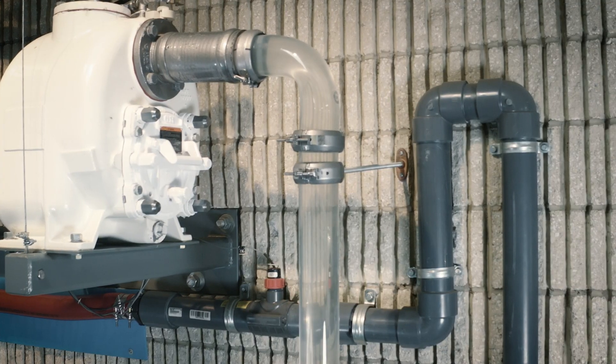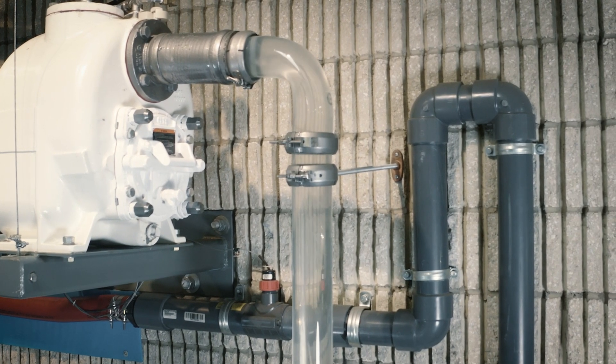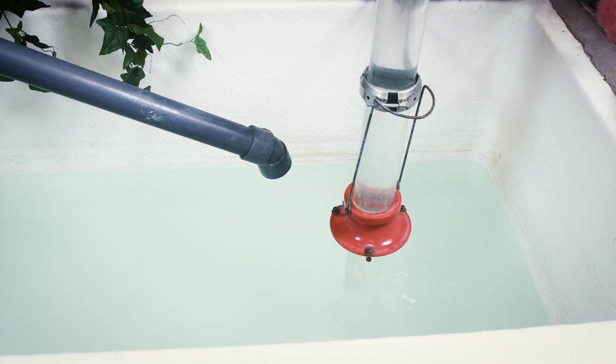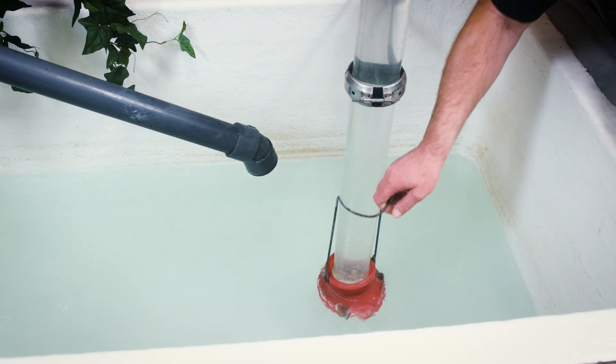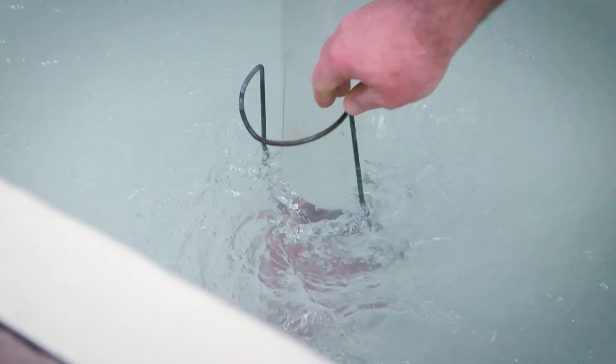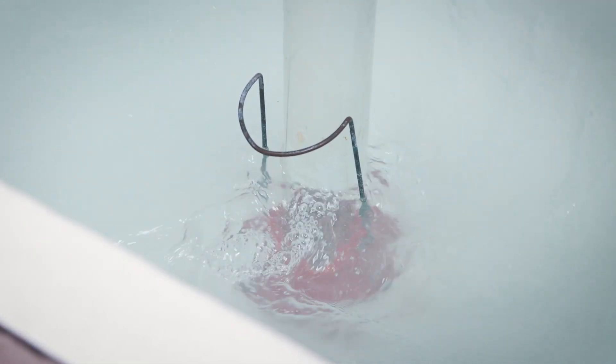This will impede the pump's performance and may cause it to lose prime. A flare attached to the end of the suction line reduces the entrance velocity of the liquid and reduces the level required in the sump to prevent vortexing.